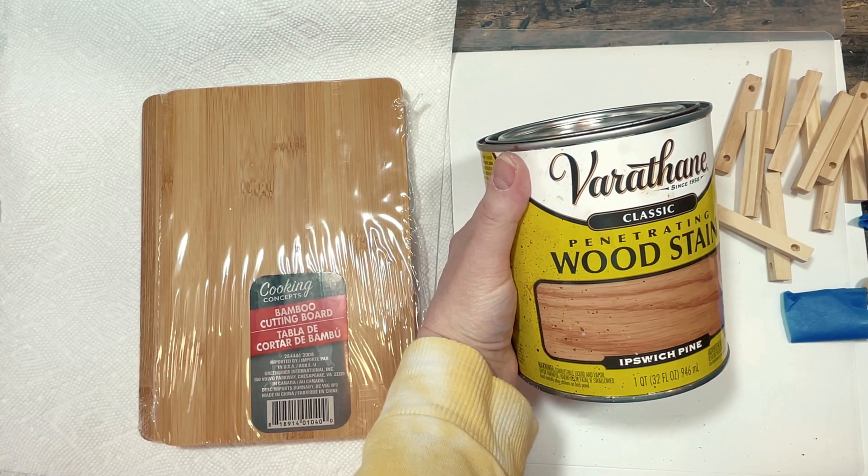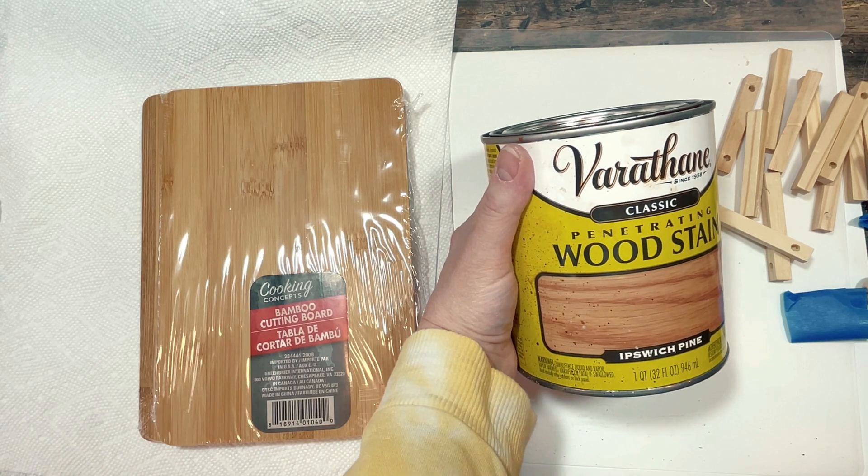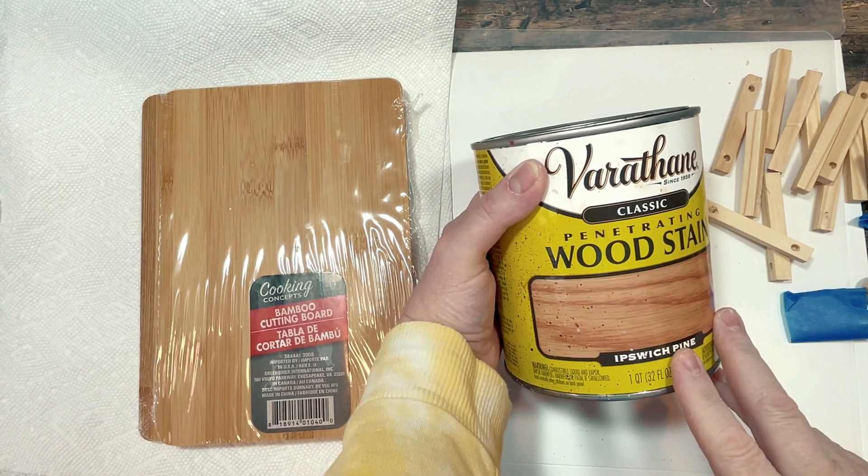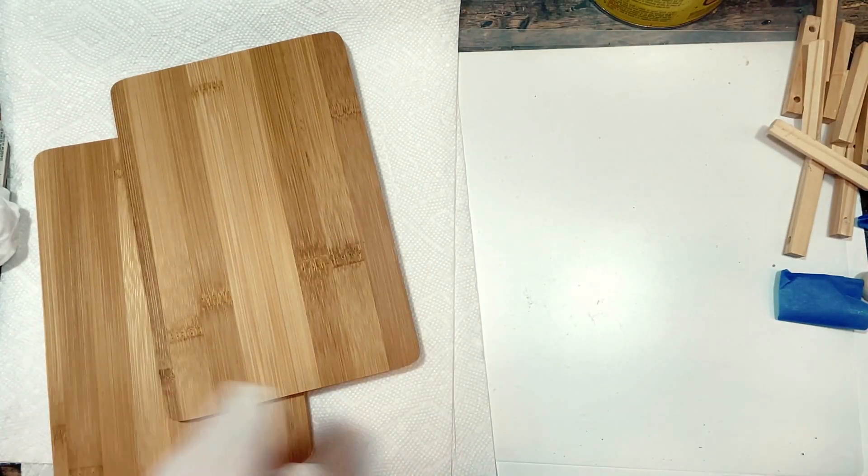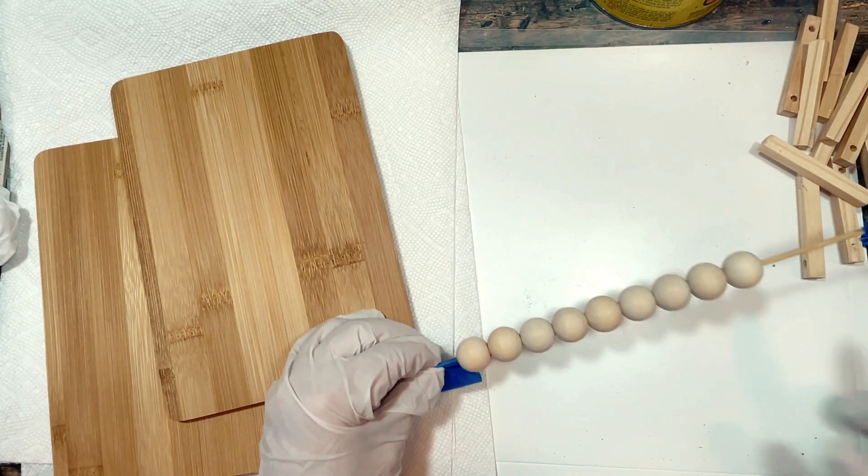I'm going to be staining all the natural wood for this tray with this Varathane wood stain in the color Ipswich pine. I will link any of the items that are not from Dollar Tree down in the description box below for you.